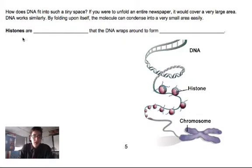What happens is this DNA will twist down on itself into very small things that we call chromosomes. Histones are special proteins. Histones are proteins that the DNA wraps around to form chromosomes. So DNA is very, very long.